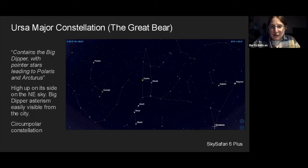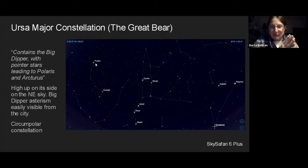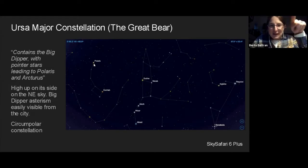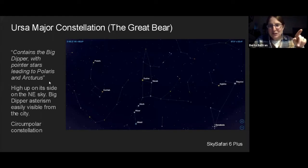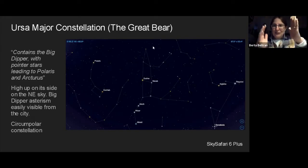Ursa Major is a circumpolar constellation visible all year. Polaris is always in the same place in the sky, always facing north. The constellations around Polaris rotate because the Earth's axis is pointing toward Polaris by chance — there's nothing magical about it. As the Earth rotates, we see those constellations rotating too. Depending on what time of night you look at the Big Dipper, you'll see it in a different orientation with respect to Polaris.